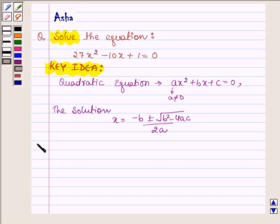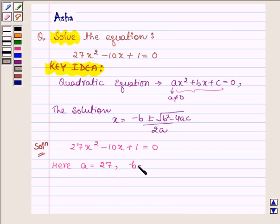Let us now begin with the solution. The given equation is 27x² - 10x + 1 = 0. On comparing it with the standard form of the quadratic equation, we find that a = 27, b = -10, and c = 1.